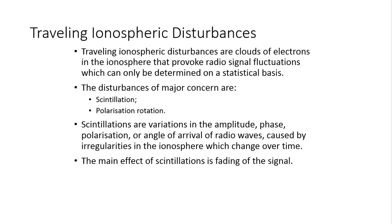Traveling ionospheric disturbances (TIDs) are clouds of electrons in the ionosphere that cause radio signal fluctuations, which can only be determined on a statistical basis. The disturbances of major concern are scintillation and polarization rotation. Scintillations are vibrations in the amplitude, phase, polarization, or angle of arrival of radio waves, caused by irregularities in the ionosphere that evolve over time. The main effect of scintillation is fading of signals.